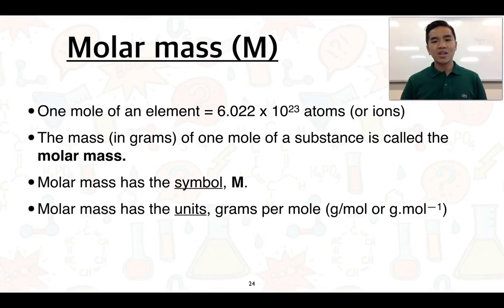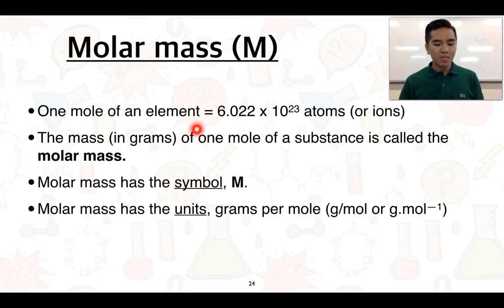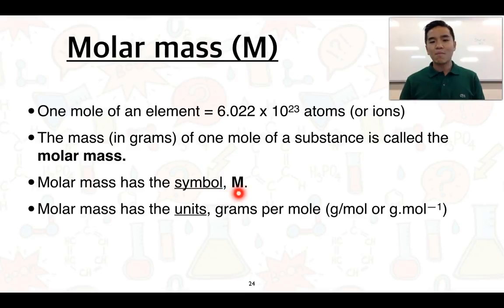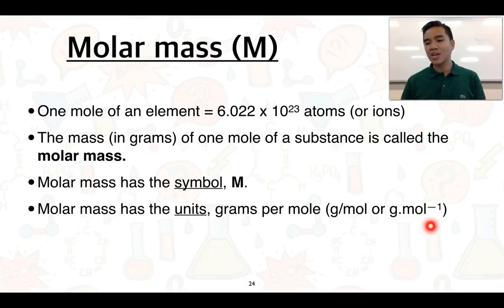Another important concept is what we call molar mass, represented by a capital M. We already know one mole of an element equals 6.022 times 10 to the 23 particles. Molar mass refers to the mass of one mole of a substance. It uses the symbol capital M and has units of grams per mole — that is, the mass per one mole of a particular substance. Both forms of expressing the units can be used in calculations.